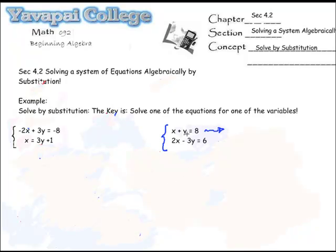Now in this second system over here, x plus y equals 8 and 2x minus 3y equals 6, neither one of these equations is solved for a particular variable, one of the variables.